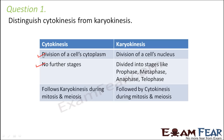In cytokinesis, we do not have further stages — it is just one simple step. But karyokinesis is a complex process and that is why it is divided into so many steps like prophase, metaphase, anaphase, and telophase. Cytokinesis occurs later, while karyokinesis occurs first. First the nucleus gets divided, and at last the cytoplasm divides, so karyokinesis is always followed by cytokinesis.